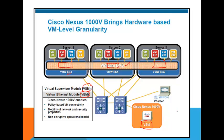The VSM is drawn outside but it's not really a separate box — it can be one of the VM machines. With 1000V, we can have more than one VSM for redundancy. The control and management plane can be part of a VM or it can be in a separate server. So we have a virtual supervisor module (VSM) and virtual ethernet modules (VEMs).